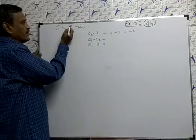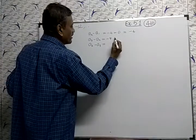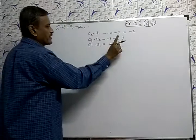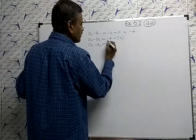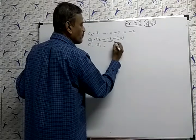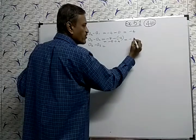Then a3 minus a2. a3 is -8 minus a2, which is already -4. We have to use the bracket here: -8 minus (-4). What is the answer? So here -8 plus 4, the answer is -4.